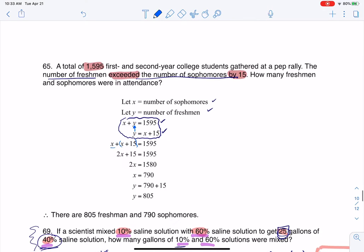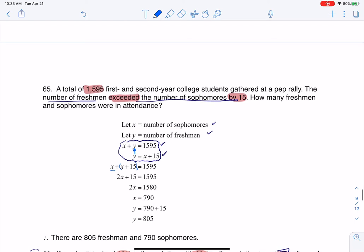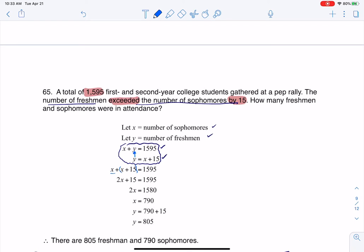It's a matter of solving for each of those numbers. Let me scroll that down so it doesn't block our view. Let me make this parentheses a little nicer. We collect like terms, we get 2x plus 15 equals 1595. Subtract the 15, x is 790.